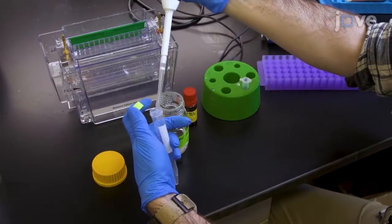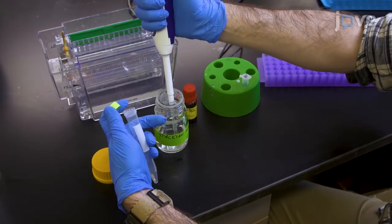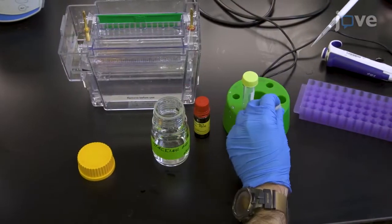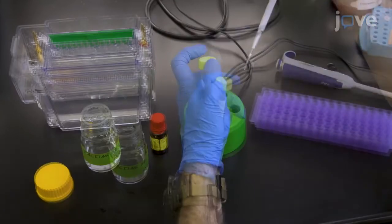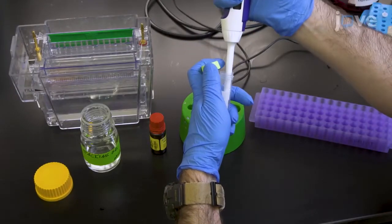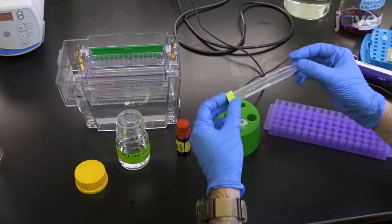Cast the stacking gel by mixing 3 milliliters of stacking gel solution with 90 microliters of freshly prepared 10% ammonium per sulfate in a 15 milliliter tube. Then add 3 microliters of T-Med and invert the tube gently 2 to 3 times.